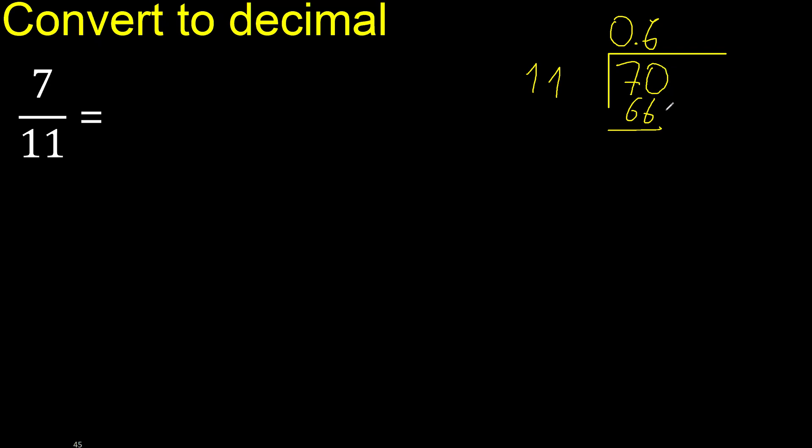70 minus 66 is 4. Next there is no number, therefore complete with 0. Point is here, 0 point. Ok, 40. 11 multiplied by 4 is greater. Multiplied by 3: 33.